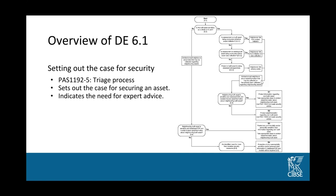PAS 1192 Part 5 contains one element which is probably the most useful in this context: a security triage process. This is a very simple set of steps — accessible in higher resolution in the PAS itself — which is a way to achieve a balanced look at how a project's security requirements can be best dealt with. We would hesitate to suggest any other method, which is why we've included it in this document. It's a very good place to start.